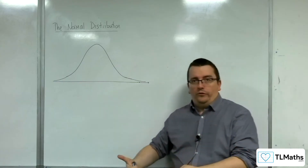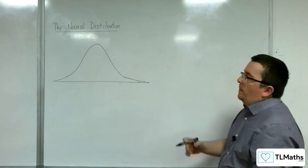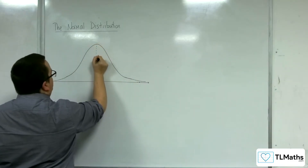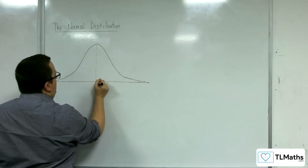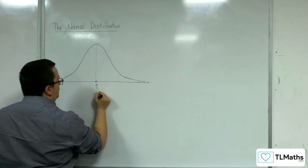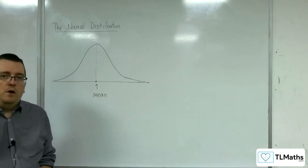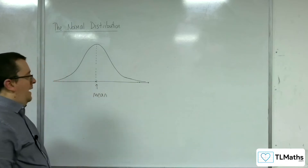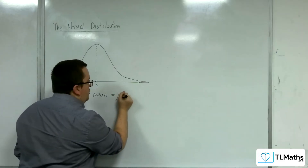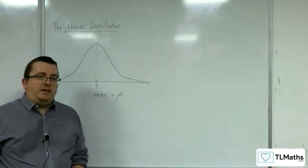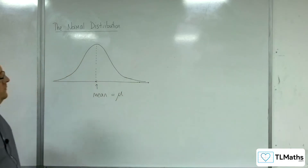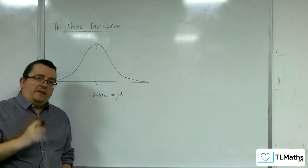This idea that it can model all of these different situations is why the normal distribution is taught and is important. What defines it is: where is the middle? This middle value represents the mean of the data, and the way that we write the mean is with the Greek letter mu — like a 'u' but with a tail.